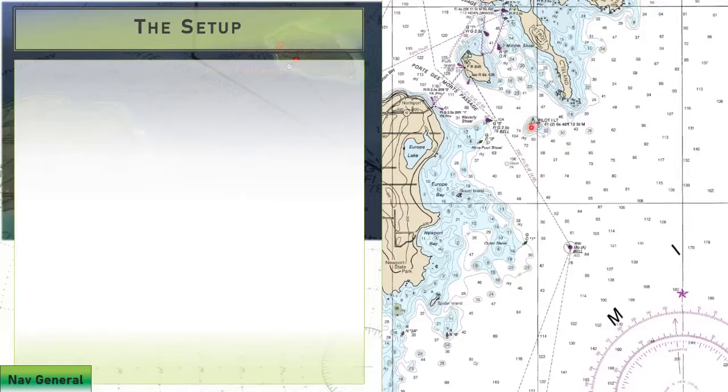For our example, when we get some background concepts, we're going to be looking at Pilot Island Light on Lake Michigan. The theoretical scenario is we're going to be coming towards the light, navigating somewhere in this area. As we approach a light, we have a fundamental question: what's the distance off when we first see a particular light? When and where are we going to see Pilot Island Light for the first time?